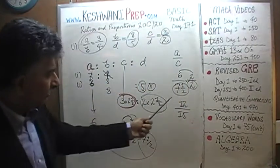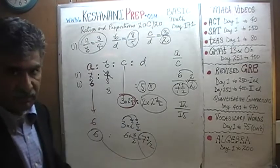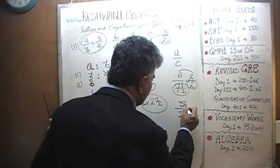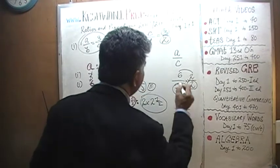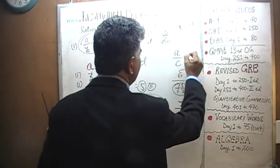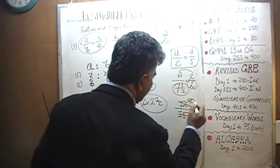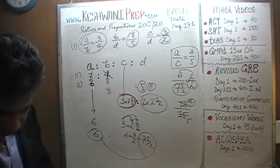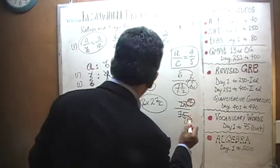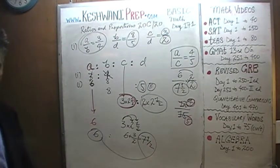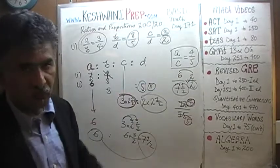And we are still not done. 12 is a multiple of 3 and 15 is a multiple of 3, so let's divide top and bottom by 3. 12 becomes 4 and 15 becomes 5. The final answer is A to C is 4 to 5.